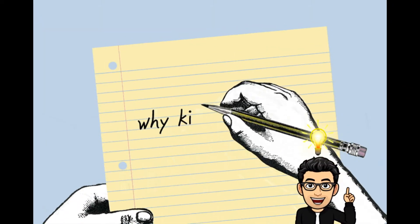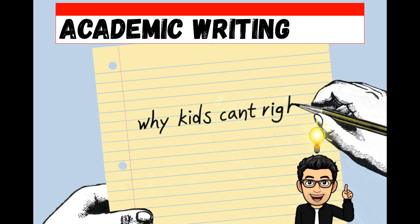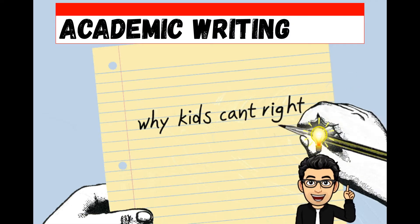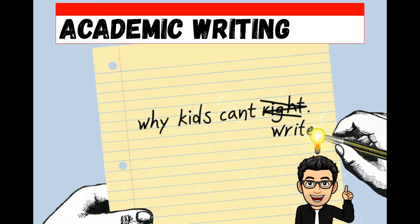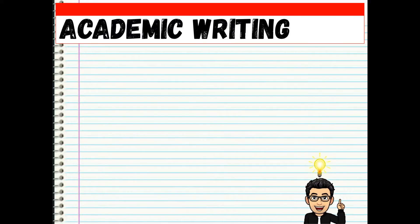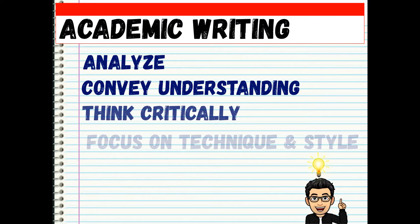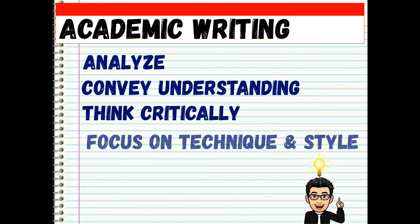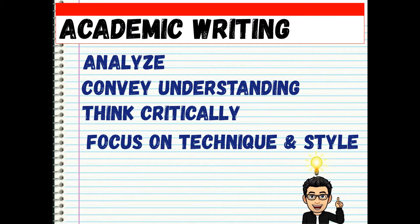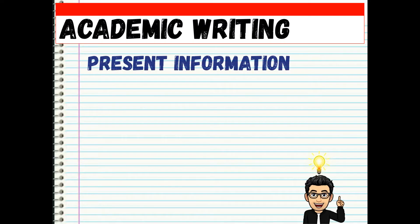This lesson will provide you with an overview of the world of academic writing. A brief discussion about its features or characteristics will also be provided. Writing academically will help you analyze, convey understanding, think critically, and focus on technique and style. Academic writing is a formal style of writing; its general purpose is to present information in order to display a clear understanding of a particular subject.